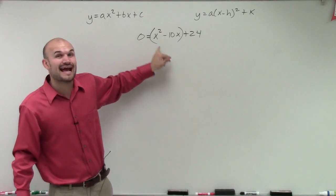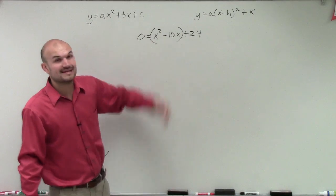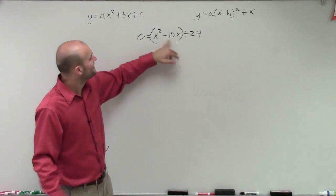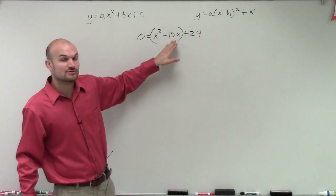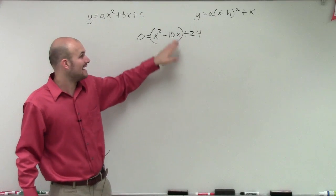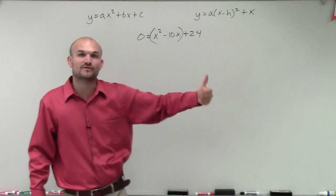And to do that, I got to make sure that my a is equal to 1. So since my a is equal to 1, that's a good start. Now the next thing is I need to find the value c inside. So I need to create a number. I'm going to add a number inside of this that's going to make a perfect square trinomial.